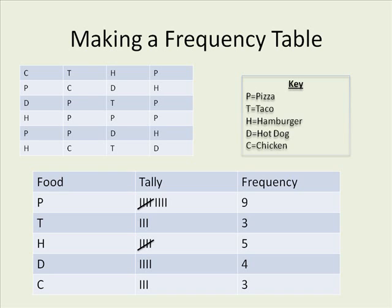In my table below, you'll see the first category is food, with the letters P, T, H, D, and C. I did that to organize my categories so I knew what the possible choices were for the students to vote for. The column to the right is the tally mark — that's where I counted up all the votes each category got. The last column is frequency, which is simply the count of all the lines I drew, helping me figure out which groups got how many votes.